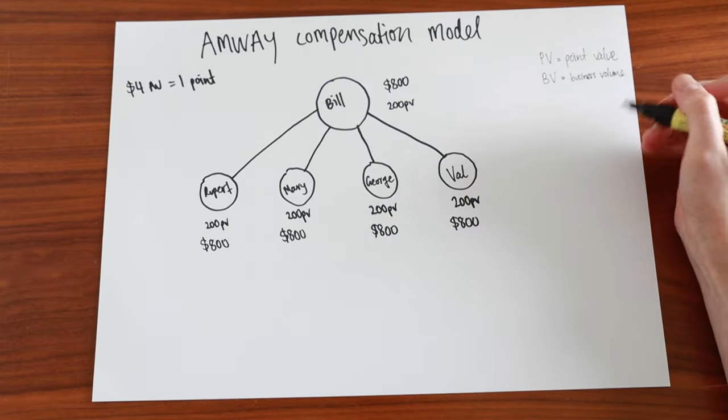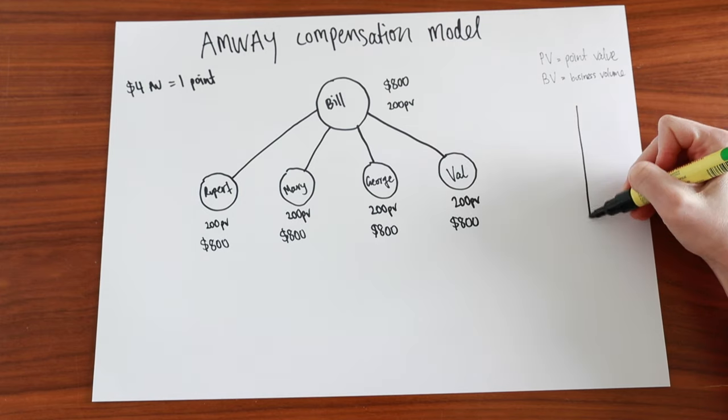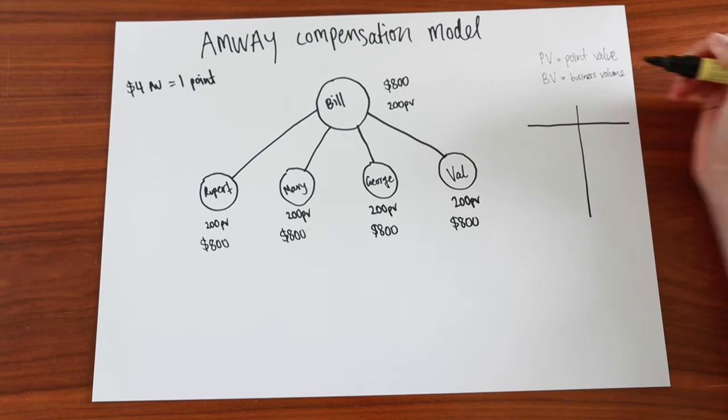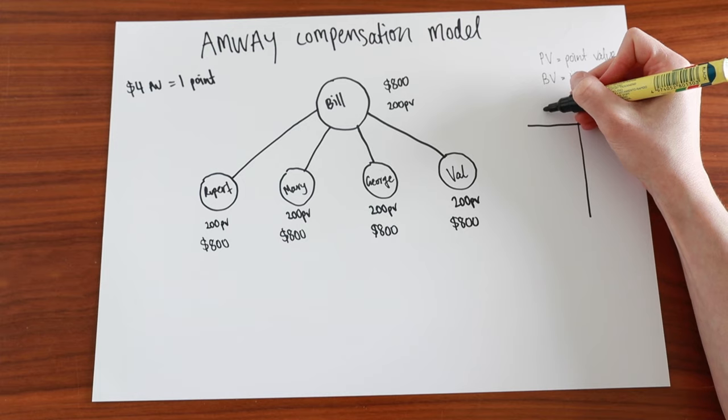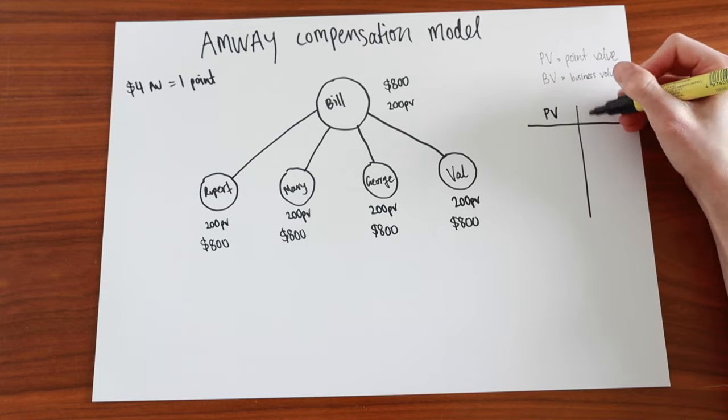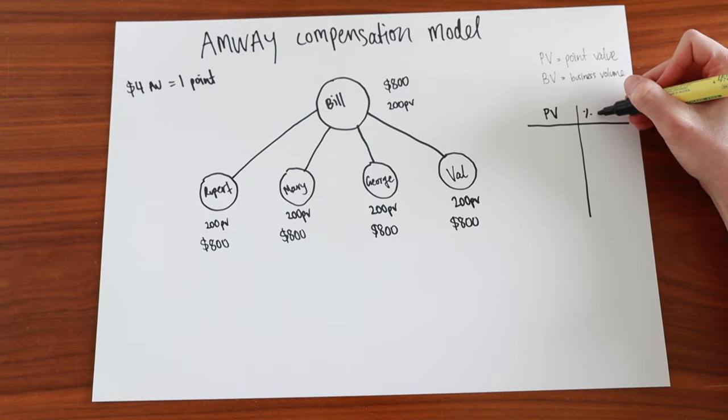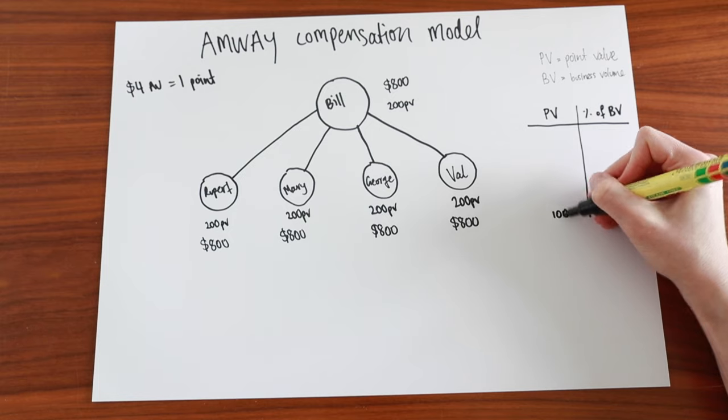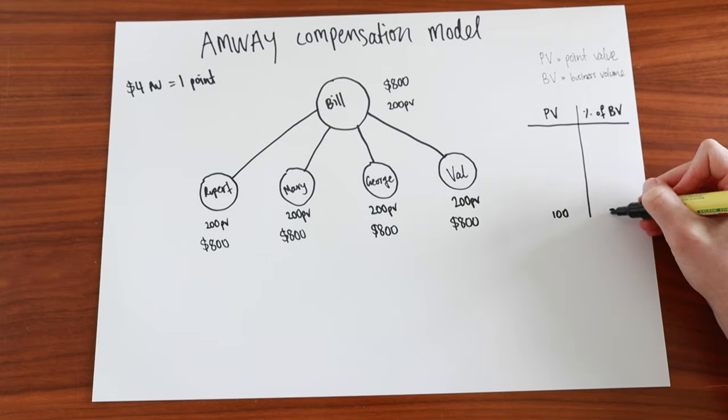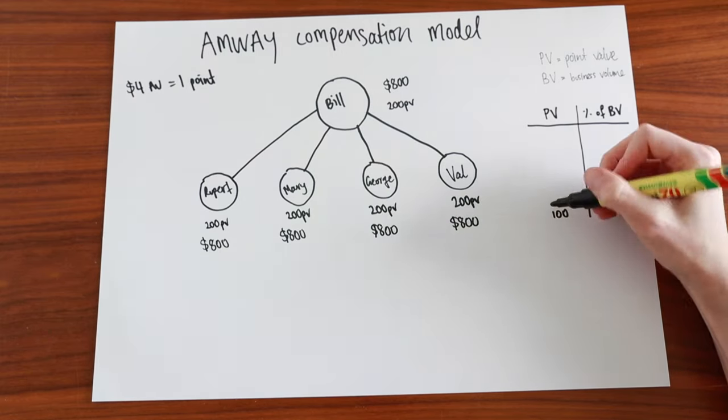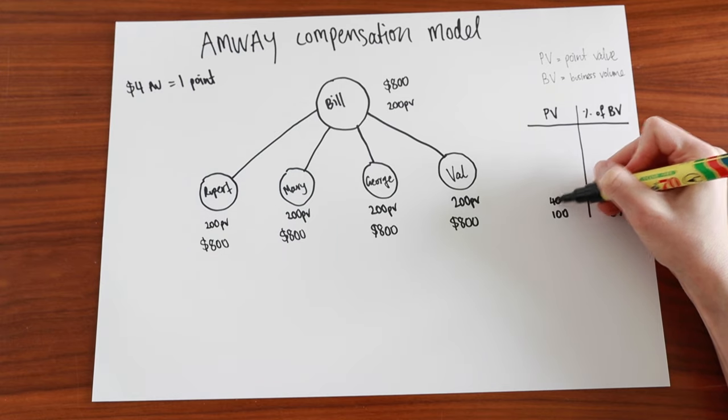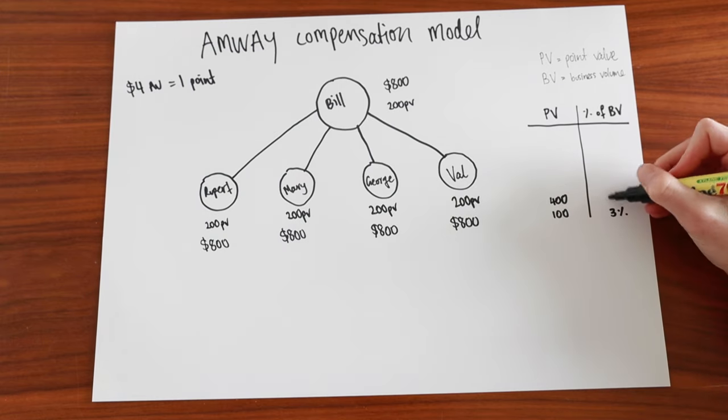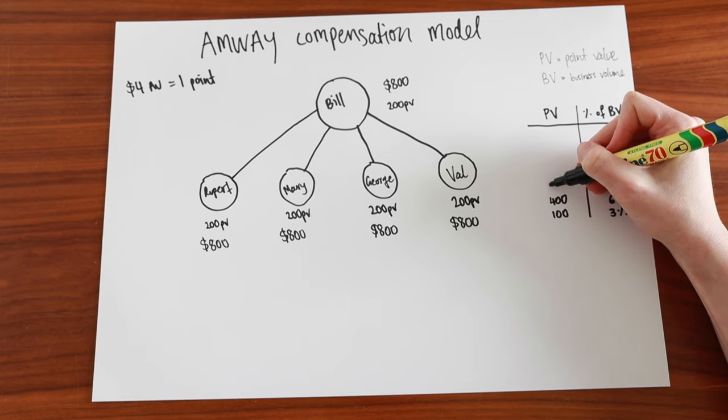So then there is this scale. On the left-hand side, you have the point value, and then on the right-hand side, the percentage of business volume. So the bottom value is 100 point value, and you get 3% back. The next qualifier is 400 PV, and you get 6% back, and so on.